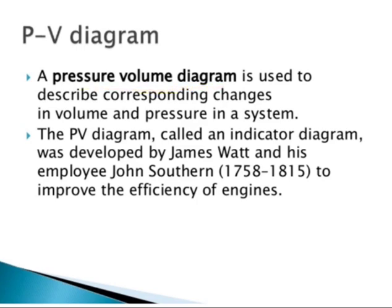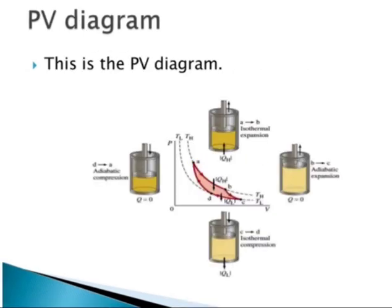This diagram is used to describe corresponding changes in volume and pressure in a system. The PV diagram is also called the indicator diagram. It was developed by James Watt and his employee John Southern from 1758 to 1815 to improve the efficiency of engines.